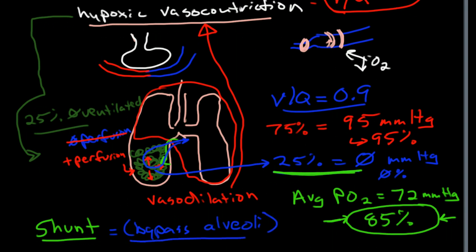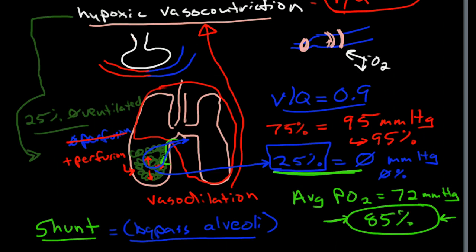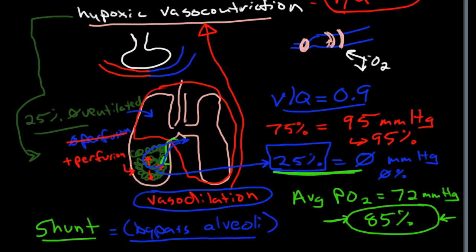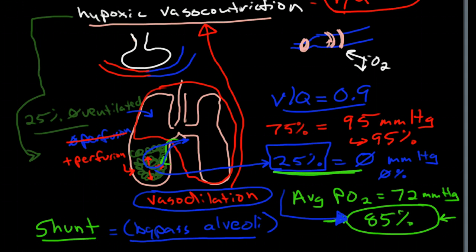Relatively small shunts can have a huge impact on oxygenation. If the vasodilation completely overwhelms the vasoconstriction, you may actually increase the blood flow to the diseased area while decreasing blood flow to the healthy lung, dropping oxygen saturations even further. That is why with pneumonia you can end up with very, very low saturations even though the pneumonia is only taking up a small portion of the lung. That was my brief introduction to ventilation and perfusion — please let me know if you have any questions.